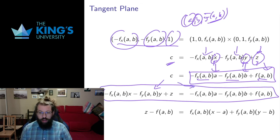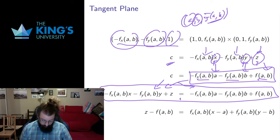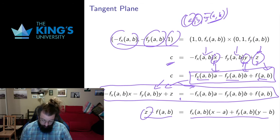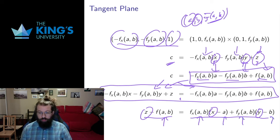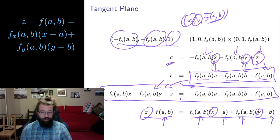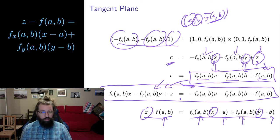If I simplify this expression and group terms together, I get: z minus f(a,b) equals the partial derivative in x times (x minus a) plus the partial derivative in y times (y minus b). The only variables are x, y, and z; the rest are constants determined by the choice of point (a,b). This is the form of the equation of a tangent plane I'll use for the rest of the video. Notice this is a generalization of the slope of a tangent line — we're still taking derivatives, evaluating them at points, and using that to describe the tangent object, even if it's more complicated than before.